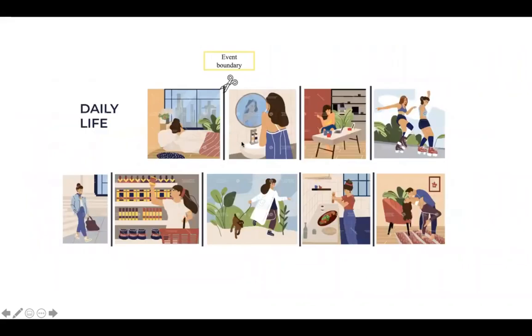One of the mechanisms that could help us make fewer such errors is event segmentation. Although perceptual information is continuous, we actually perceive our daily life as a succession of different events that are segregated by event boundaries.